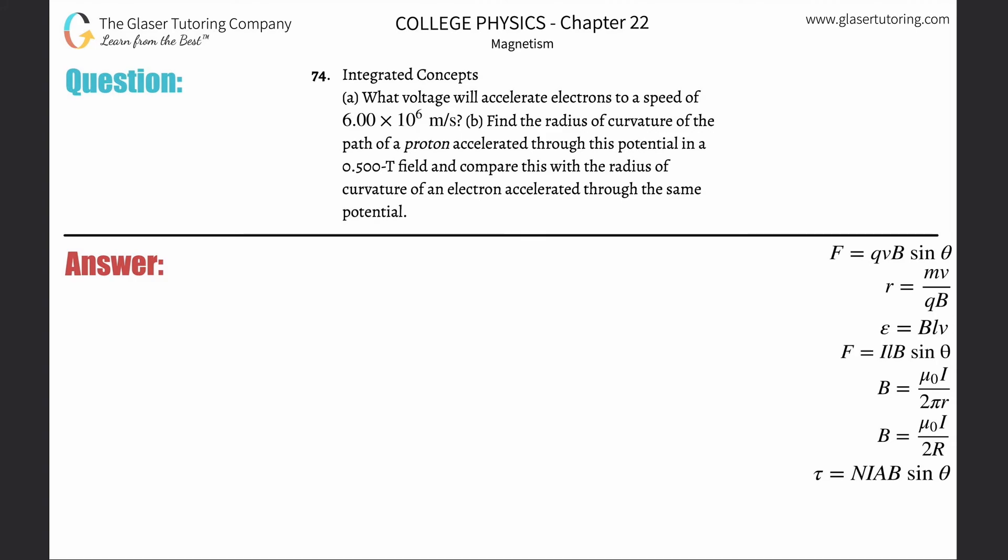Number 74, integrated concepts, letter A: What voltage will accelerate electrons to a speed of 6×10^6 meters per second? All right, so we're going to need a formula from a couple of chapters ago.